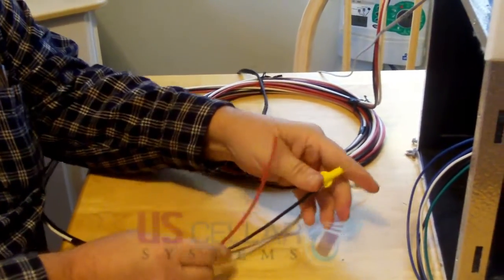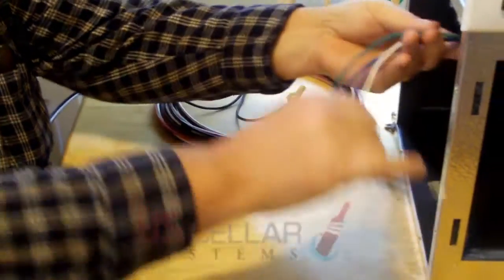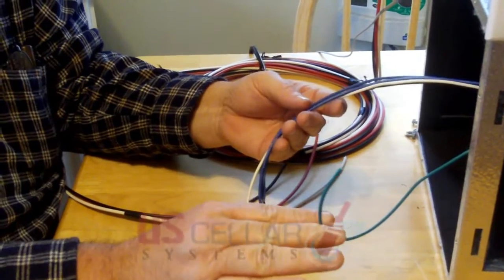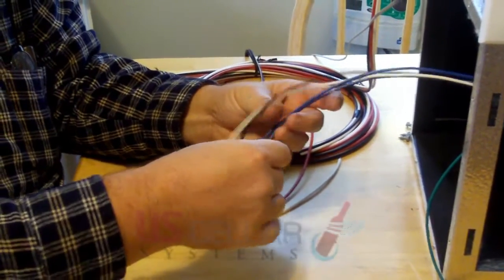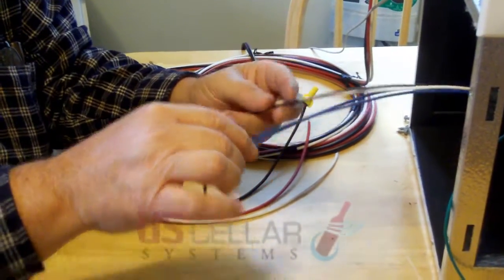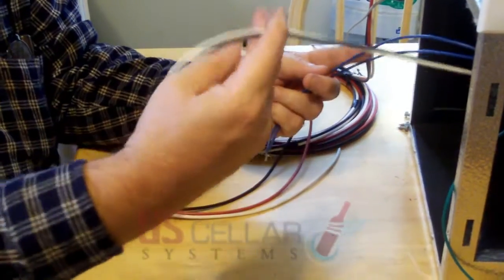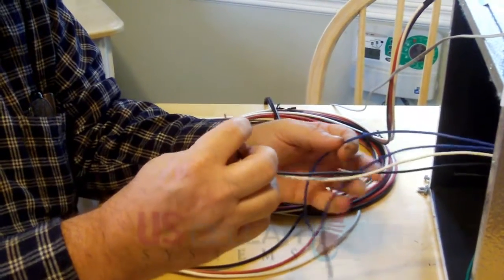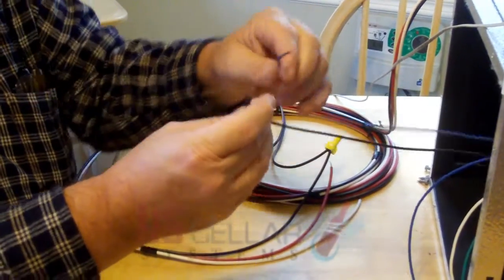Then inside the evaporator coil, you're going to have five wires. You've got a green wire, which will be connected to your ground. You have two blue wires, which are the solenoid valve, and a black wire and a white wire for the fan motor. Take one of the blue wires and one